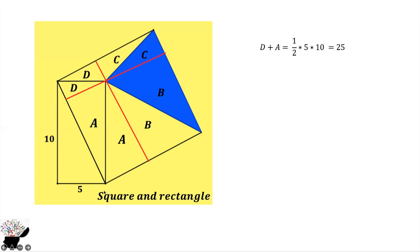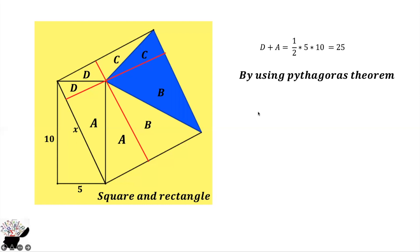We can label the diagonal of the rectangle as X. We know the area of the square is S², where S is the side length. Since X is the diagonal of the rectangle, using Pythagoras' theorem we get the area of the square S² = 10² + 5².